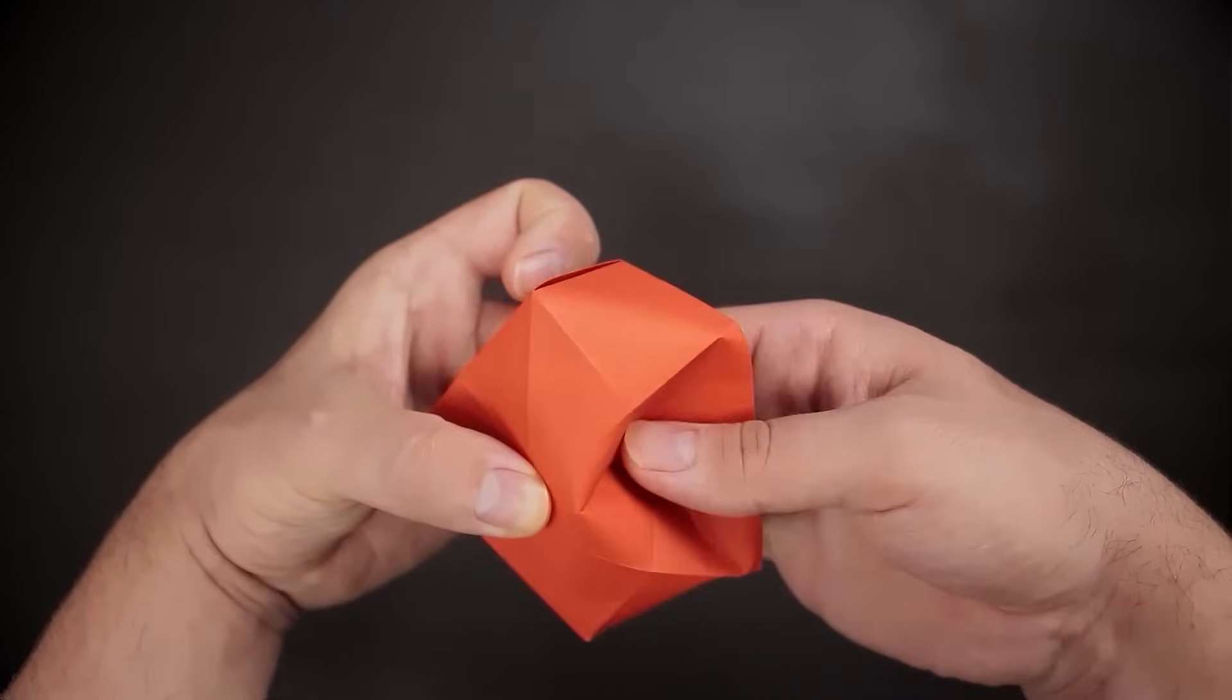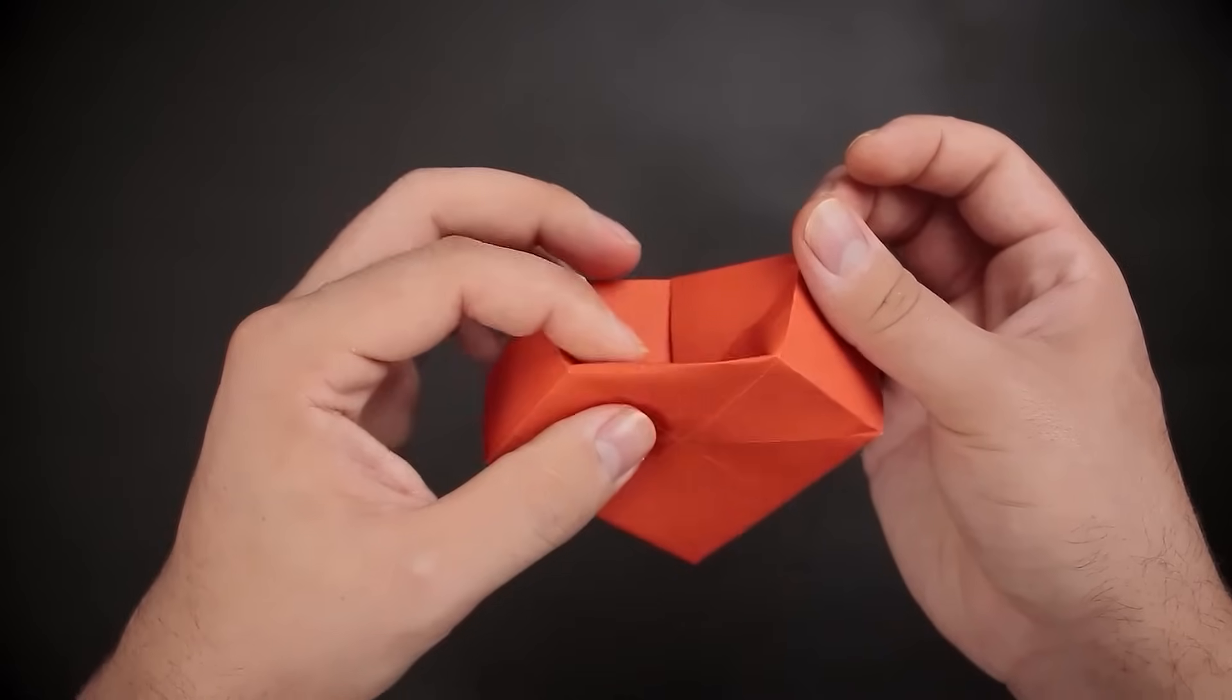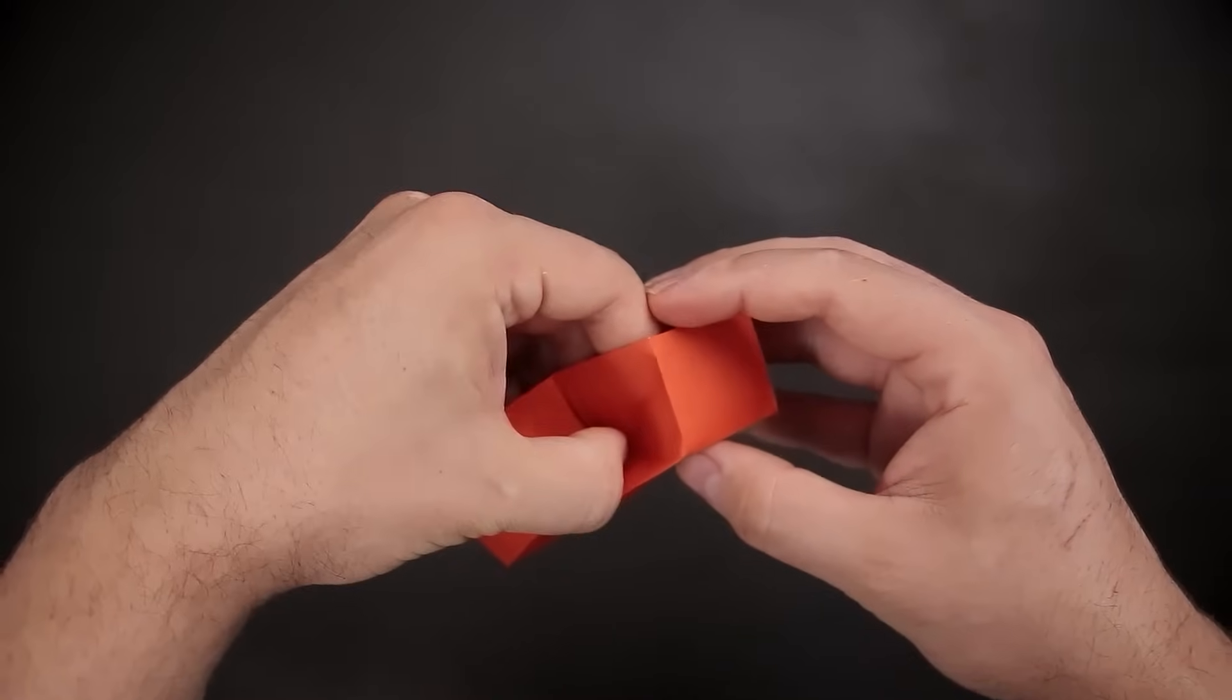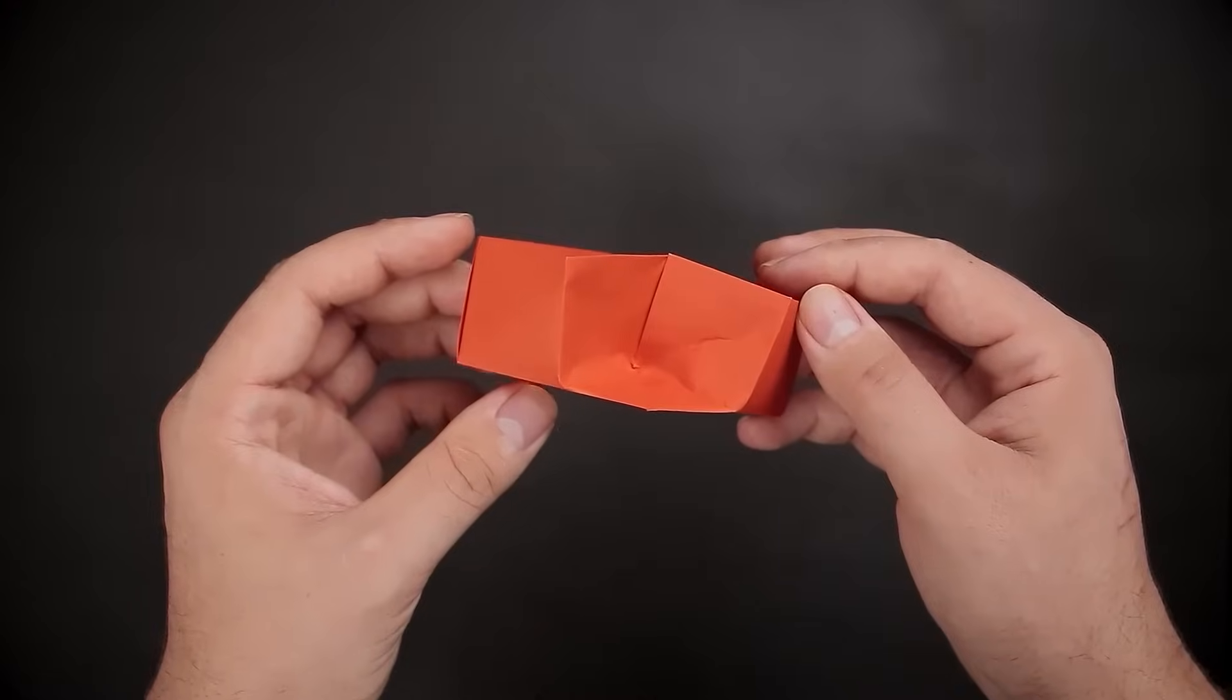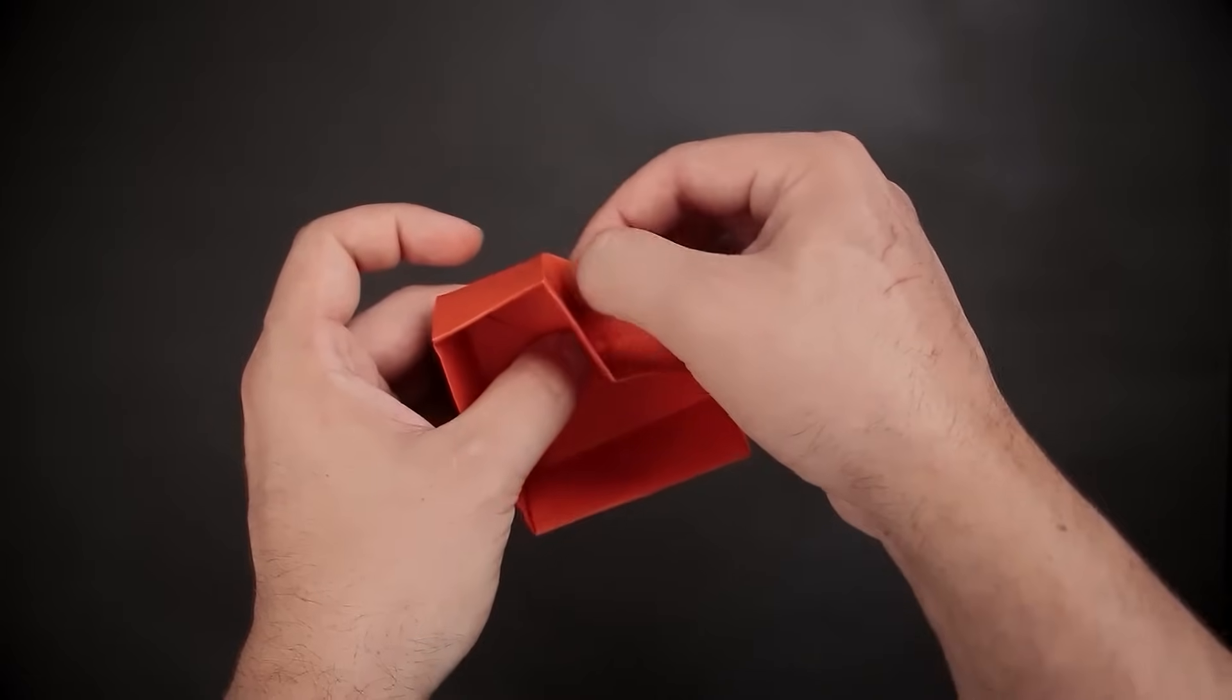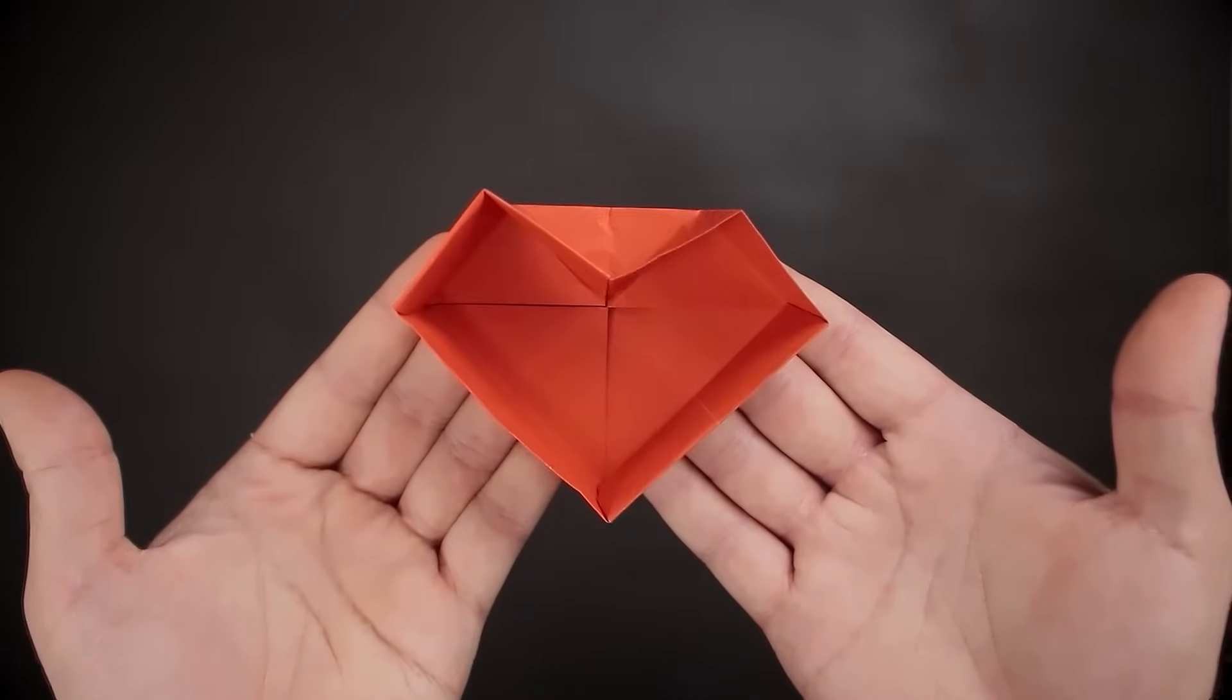Then, let's reinforce mostly the line that I showed before, connecting those two creases, those two points. Let's fix it a little more at the end, making everything as straight as possible. And we have our heart box.